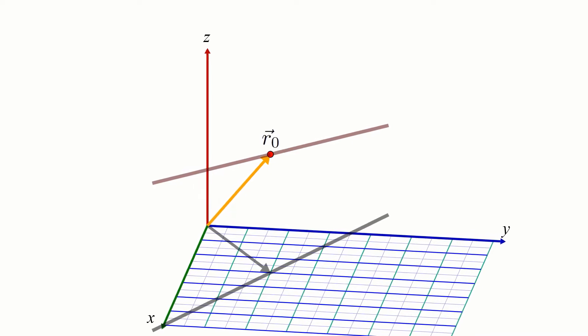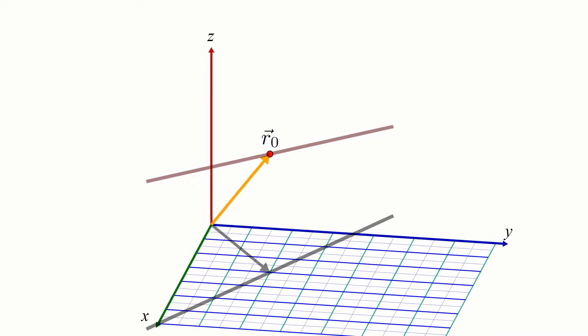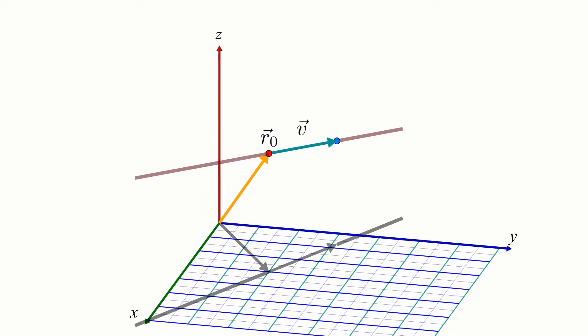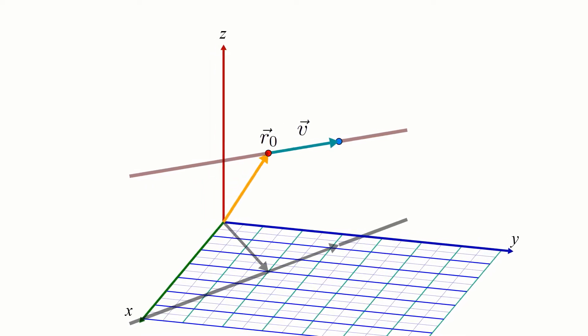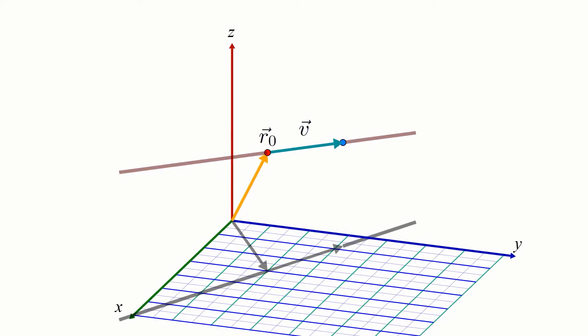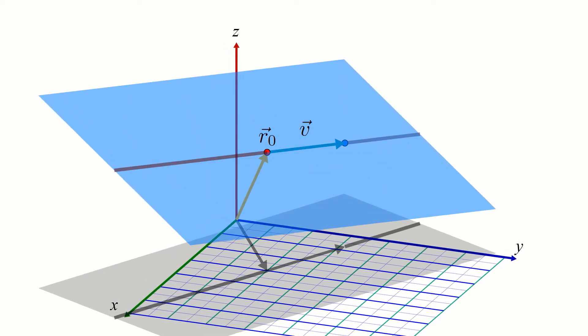Let's start with a point r0 that sits on some line that is supposed to be contained in our plane. Now let's throw in a direction vector v that is parallel to the line and thus parallel to the plane also. This seems fine so far, and maybe we can already envision the plane this describes.